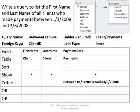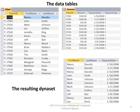Here I'm looking for a range. Write a query to list the first name and last name of all clients who made payments between 1-1-2008 and 3-8-2008, inclusive. Notice under the criteria row, under the payment date field, I have: between #1-1-2008# and #3-8-2008#. Pound signs surrounding those numbers means they're date fields — same criteria syntax as we learned before — but we're using the keyword BETWEEN and the keyword AND. No quotes because they are keywords. So we're looking for a range here. If you run this query, the Dynaset on the bottom right-hand side of your screen will display.